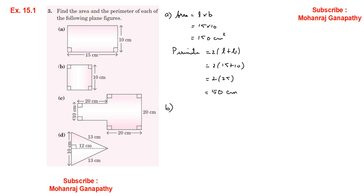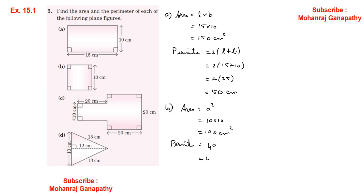Figure B is a square: Area = A² = 10 × 10 = 100 square centimeters. Perimeter of square = 4A = 4 × 10 = 40 centimeters.